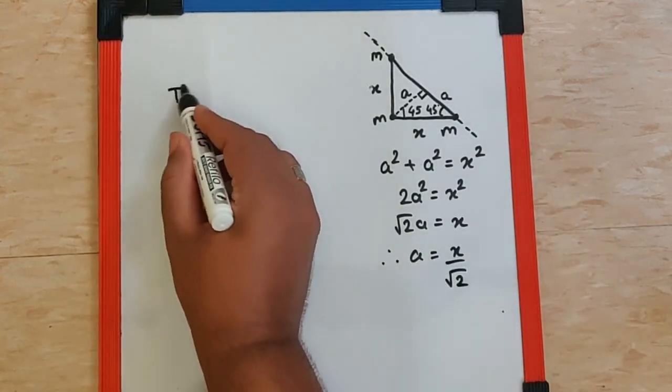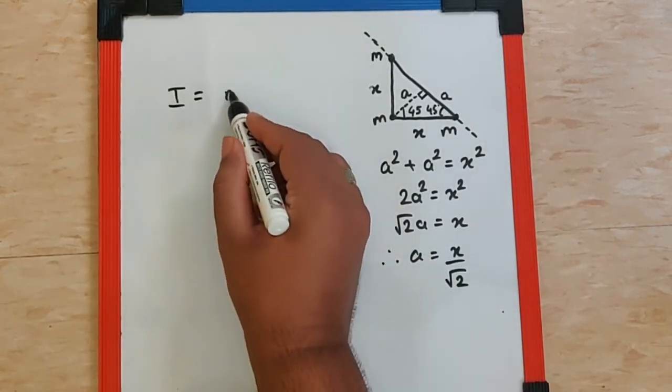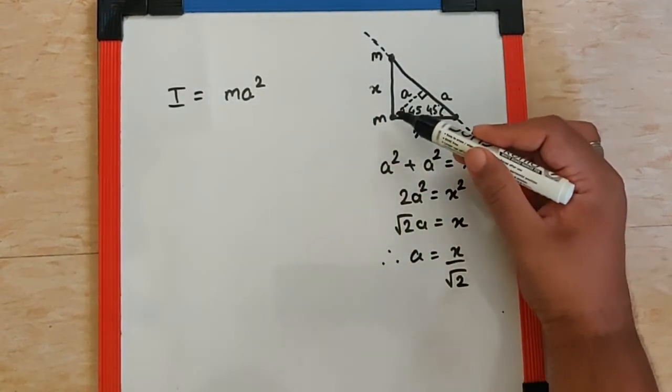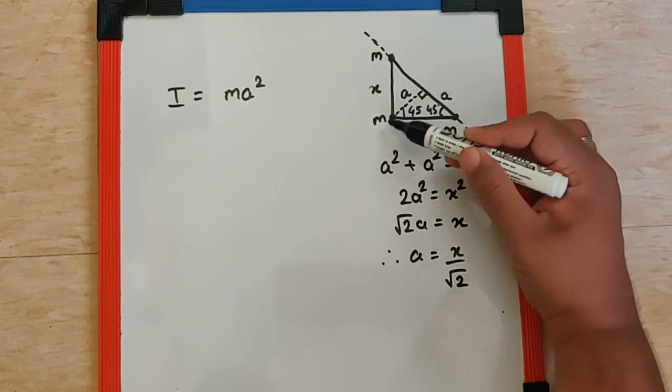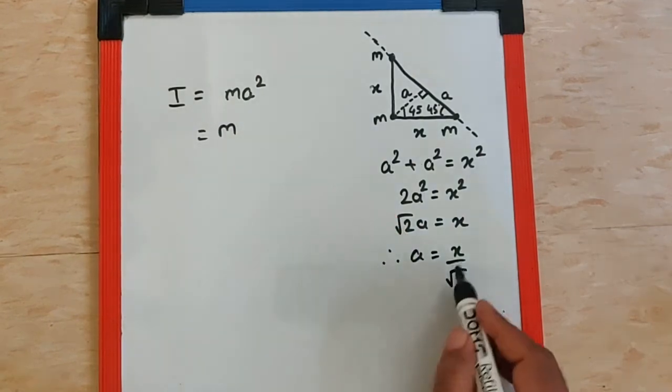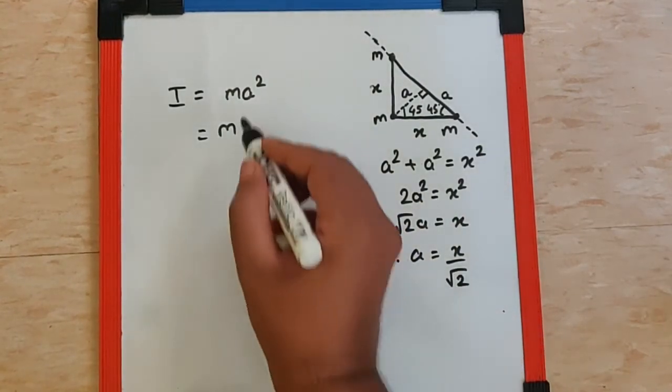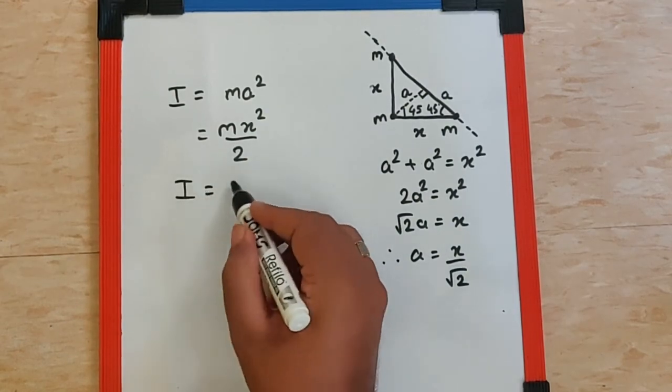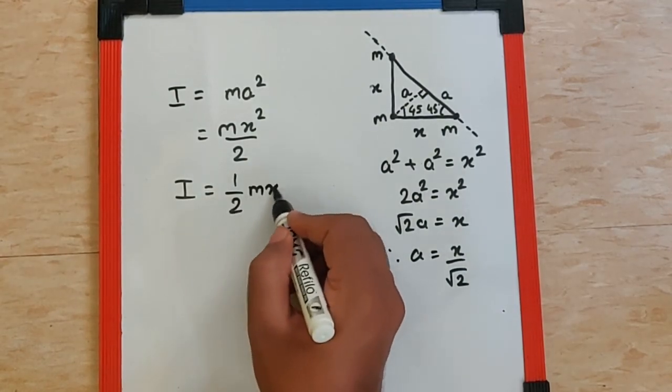Now moment of inertia by formula is MA square. Mass of the particle into the square of the perpendicular distance of that particle from the axis of rotation. And we know A is nothing but X by root 2. The square of which will be X square by 2. And so the final answer will be half M X square.